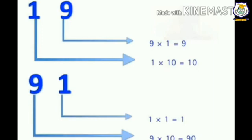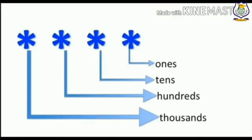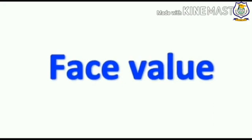And in 91, 1 is at the place of 1s and 9 is at the place of 10s. Now let's understand the value of place from right to left. The digit at the right side is 1s, and the digit to the left of 1s is 10s. Now we know that the value of the digit in a number changes according to its place. Now let's look at the face value.